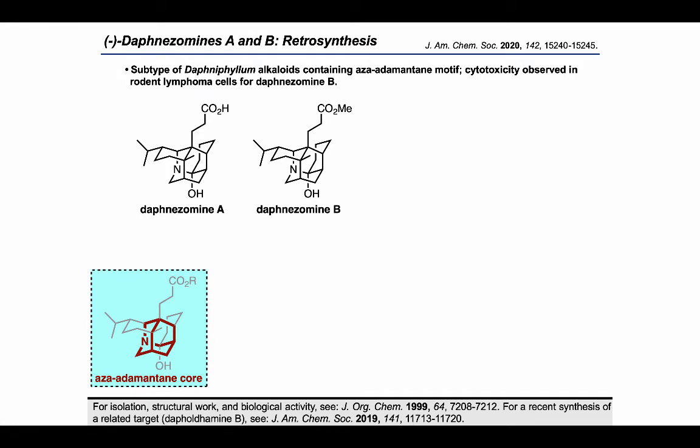Daphnizamines A and B are a particular subtype of Daphnifilum alkaloids which possess an aza-adamantane motif. Aside from their structural complexity, they do possess some desirable biological activity in that Daphnizamine B is cytotoxic against rodent lymphoma cells.